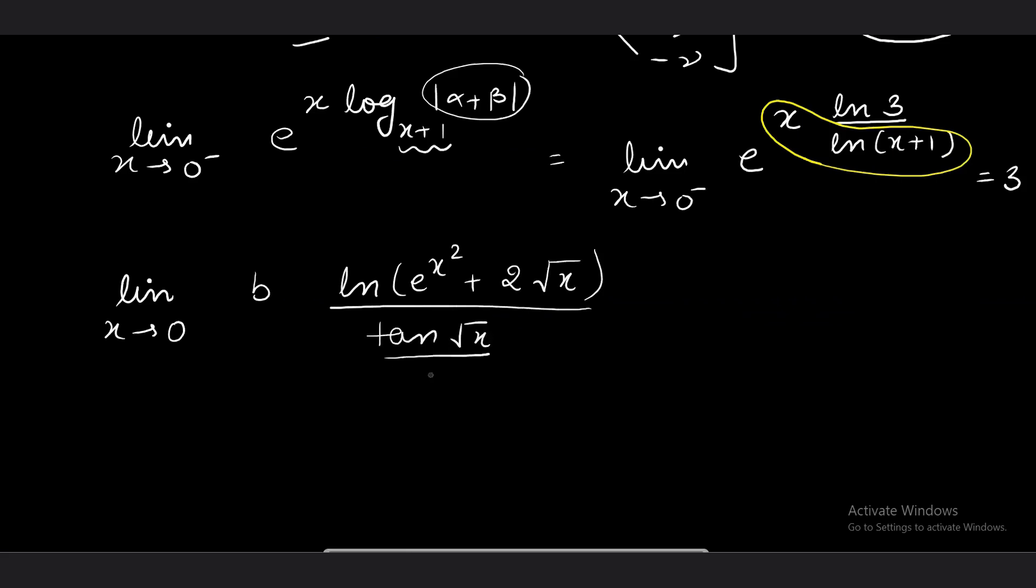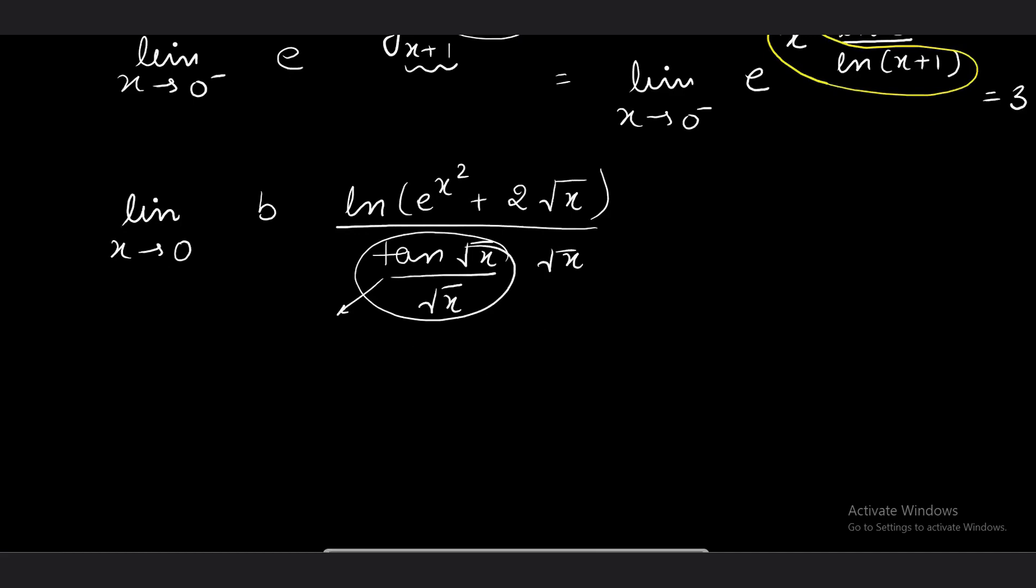Now b is written and this expression is also written. So what to do? This becomes limit x → 0⁺. I'll use L'Hôpital's rule here.